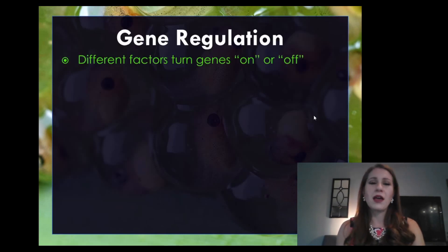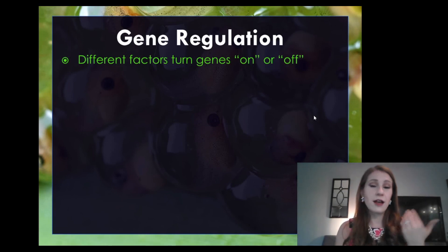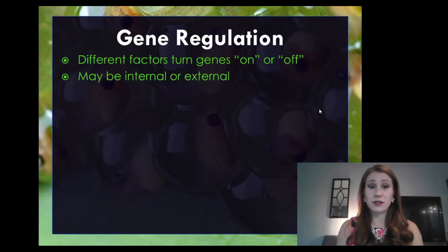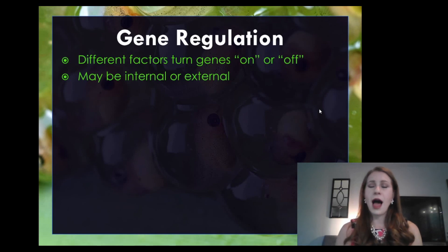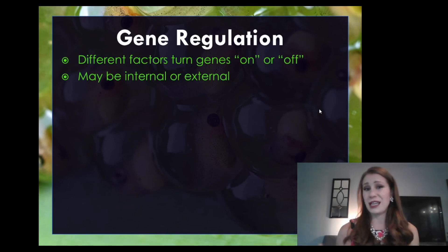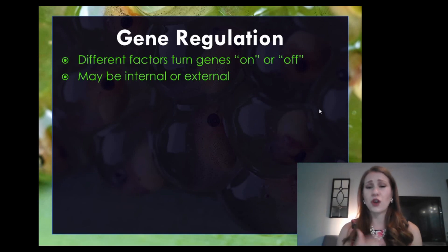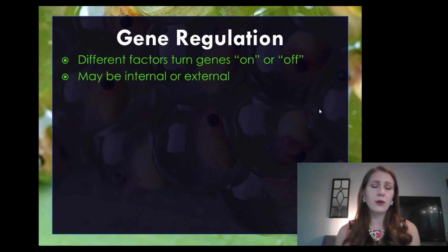So back to gene regulation. There are different factors that turn genes on and off. As we saw in the example of the snowshoe hare, temperature is one of these factors. They can be internal or external. Sometimes you have internal messengers called hormones that turn genes on and off in your body — hormones can influence your cells to turn genes on and off. Externally, we have chemicals, exposure to different temperatures, and other environmental factors.